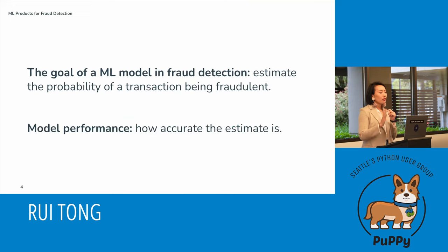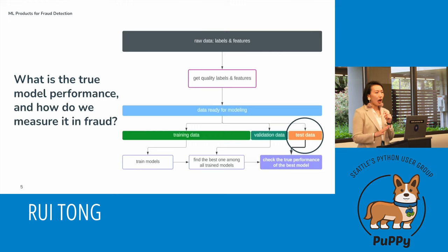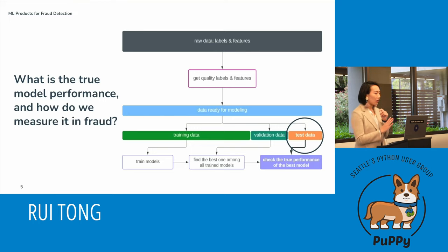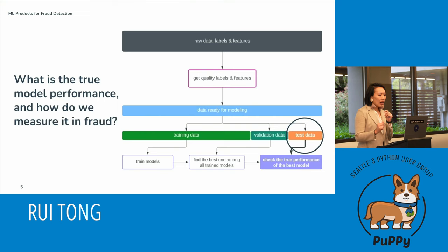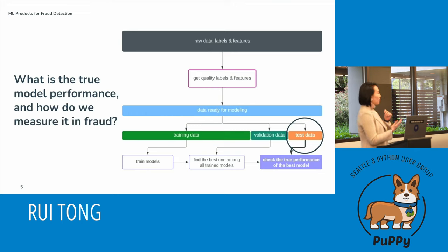The goal of an ML model in fraud detection is to estimate the probability of a transaction being fraudulent. Whenever I use the phrase 'model performance,' it refers to how accurate that estimate is. So let's narrow down our topic: what is the true model performance and how do we measure it in fraud? I want to draw your attention to the test data and how measuring model performance there is really difficult.